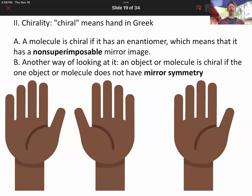Now, let's talk about mirror symmetry. Another way of looking at it is an object or molecule is chiral if the one object, just one of them, does not have mirror symmetry.